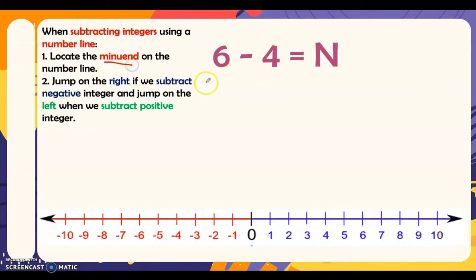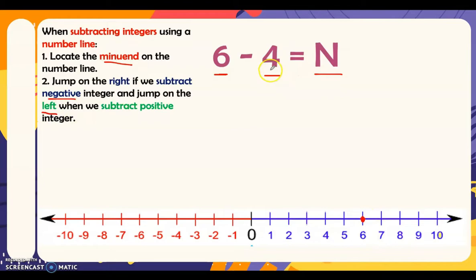On the number line, the minuend is the first number. So 6 is the minuend, 4 is the subtrahend, and the answer is the difference. Let's locate 6 on the number line. Next step: since 4 is positive, we jump to the left 4 times — 1, 2, 3, 4 — and we end up at 2. Therefore, 6 minus 4 is equal to 2.